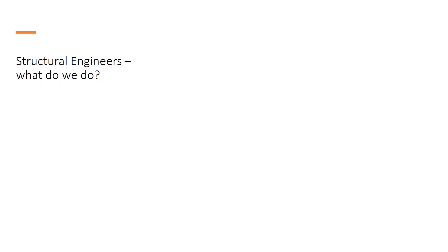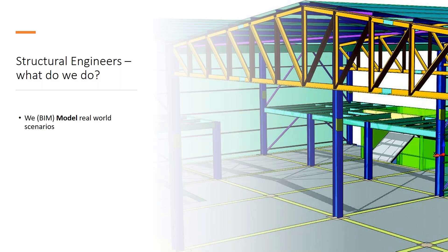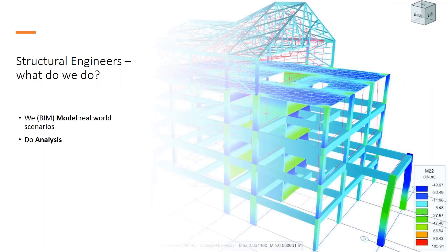Let's start with what structural engineers do — let's try to recapture what we do in our lives. We model the real world; we try to model the real world in the best way possible. We try to make a model which is a multi-material model — it can have steel, it can have concrete and other materials — and we try to make sure that it resembles, in the best possible way, what the real world scenario will be, so that our analyses are correct.